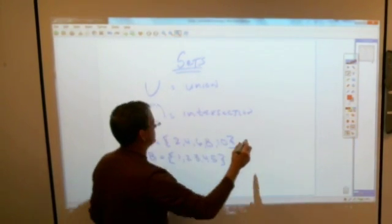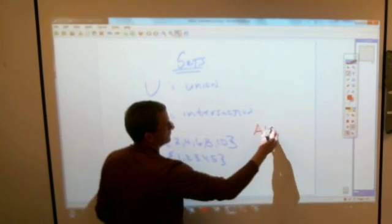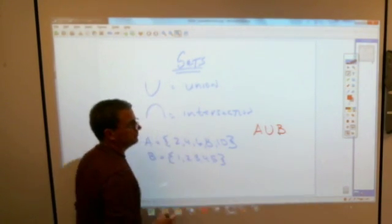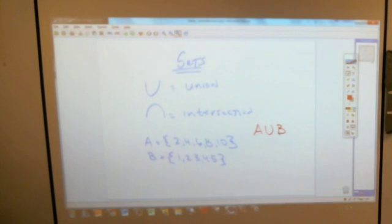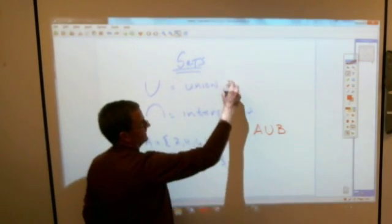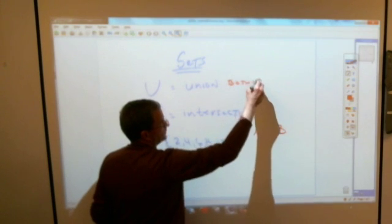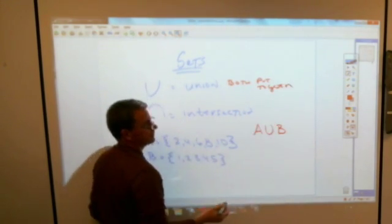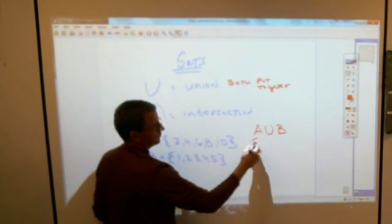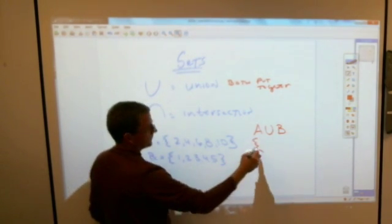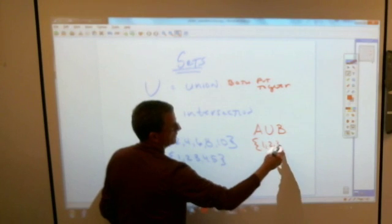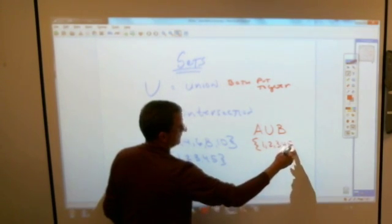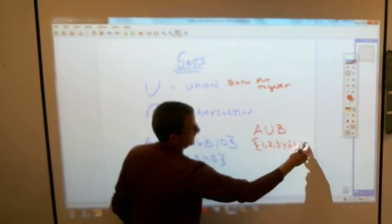If you were asked to give the set of the union of A and B, union means both put together. And in this case, both of them put together would be 1, 2, 3, 4, 5, 6, 8, and 10.